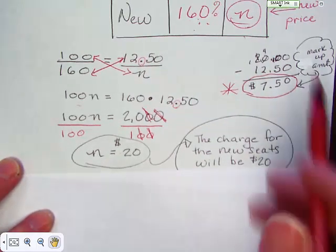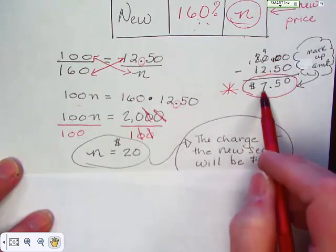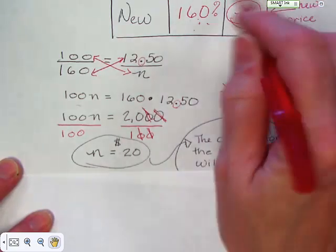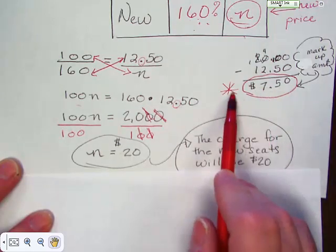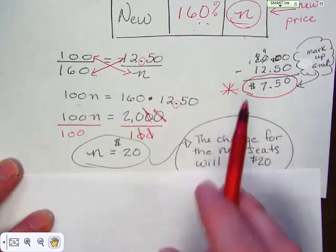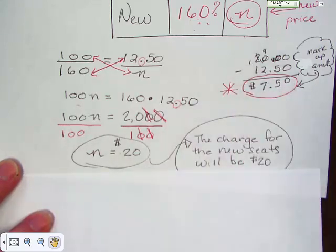And you end up with twenty. The charge for the new seats will be twenty dollars. And if you look over here twenty minus the original cost of twelve fifty tells you that this middle amount the markup is seven fifty. And that's how much she's going to make for her group for every stadium seat that she sells. You sell a hundred stadium seats you're going to make seven hundred and fifty dollars.